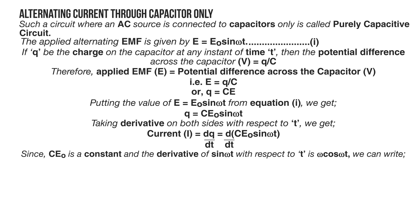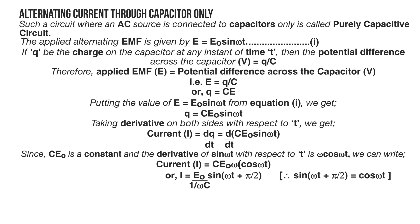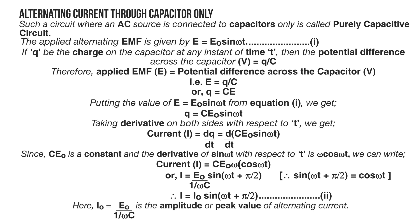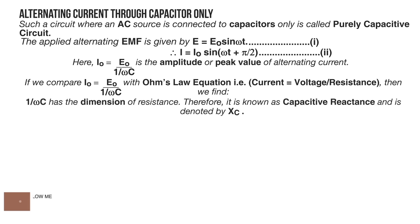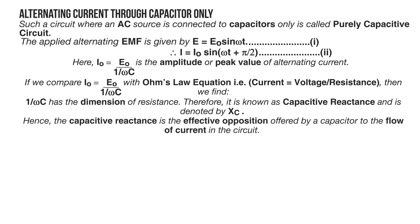Taking the derivative: I = dQ/dt = CE₀ · d/dt[sine(ωt)] = CE₀ω cos(ωt), which can be written as I = (E₀/(1/ωC)) sine(ωt + π/2), so I = I₀ sine(ωt + π/2) — equation 2, where I₀ = E₀/(1/ωC) is the peak current. Comparing with Ohm's law, 1/(ωC) has the dimension of resistance; it is called capacitive reactance, denoted X_C. Capacitive reactance is the effective opposition offered by a capacitor to the flow of current. Thus X_C = 1/(ωC) = 1/(2πfC).